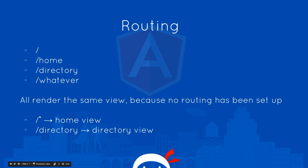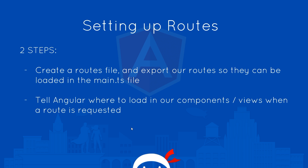Ideally, if a user goes to just forward slash they get the home view, and if they go to forward slash directory they get the directory view rendered in the browser. To do this we're going to take two steps: first we'll create a route file and define all of our routes within that file, then export them so they can be loaded into the main.ts file where the application is bootstrapped. The second step is to tell Angular where to load in our components when a specific route is requested.